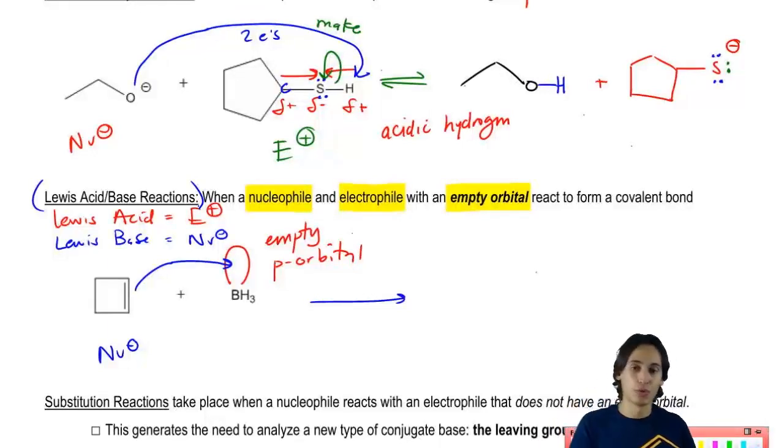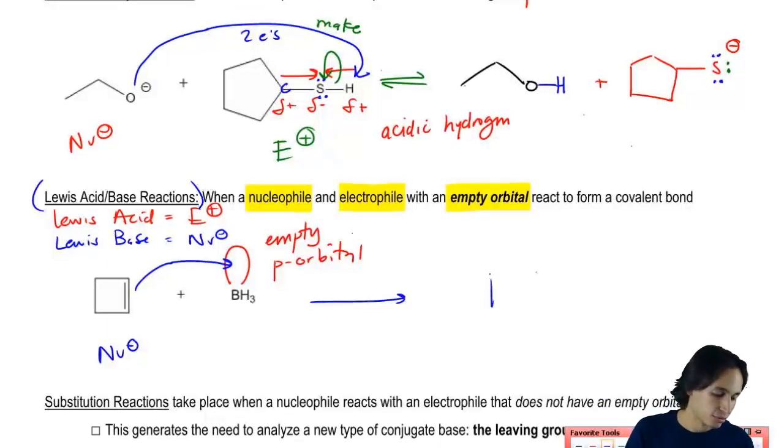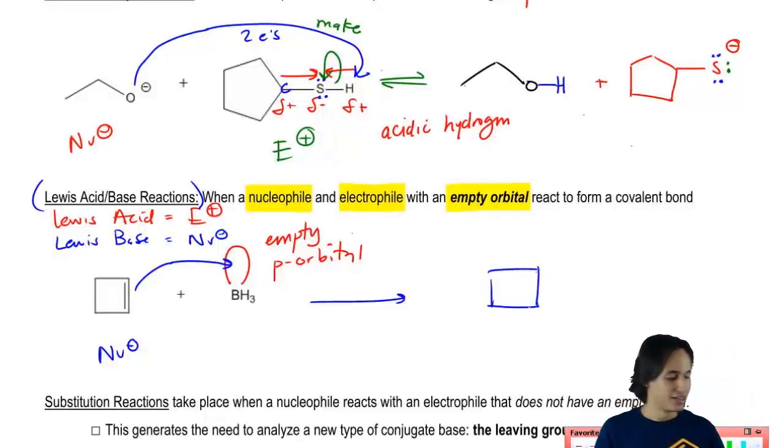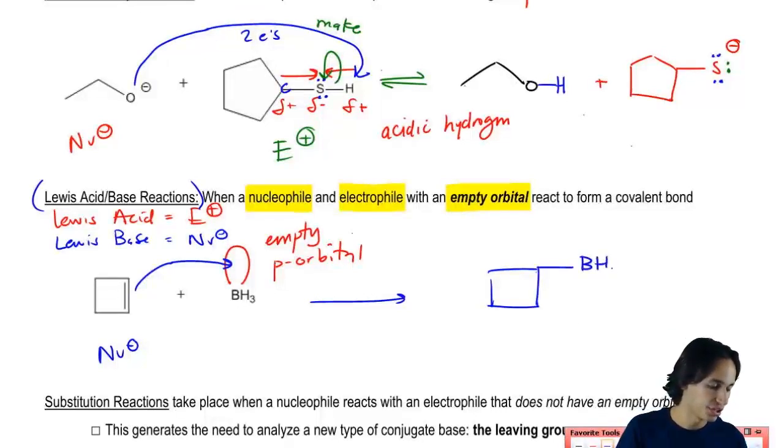So this is what we were used to doing in the acid base chapter. When we had an empty orbital, we would just draw this. And what I would get now is a square again, a cyclobutane. Now you guys know how to name that. And I would get now BH3.